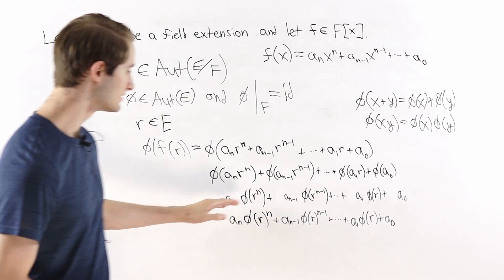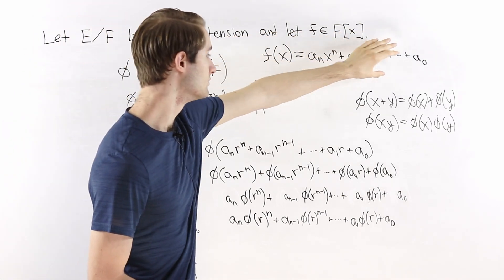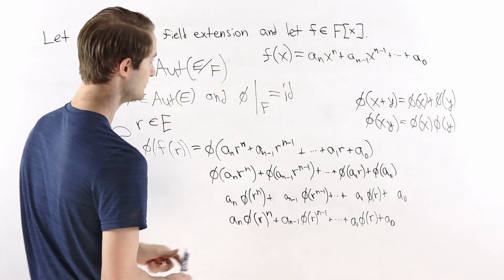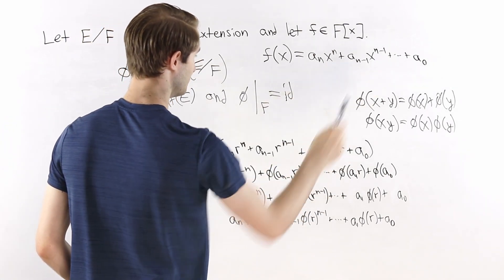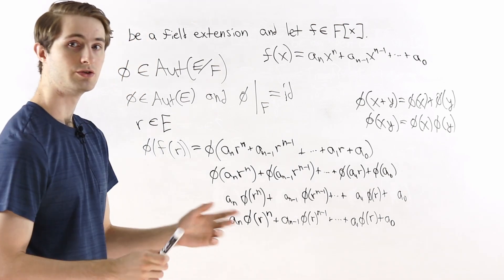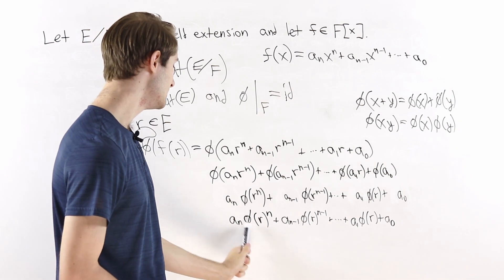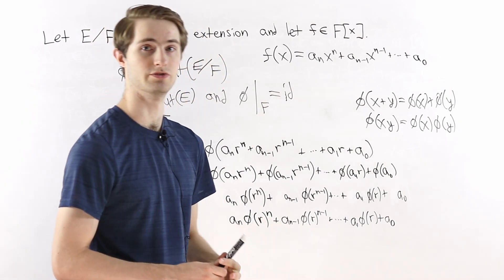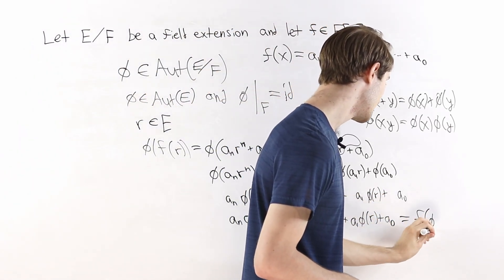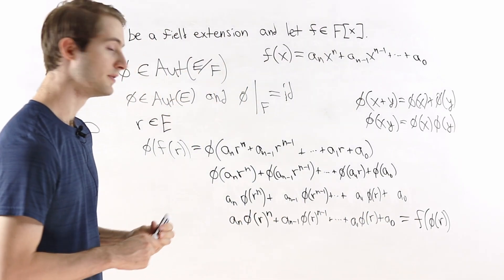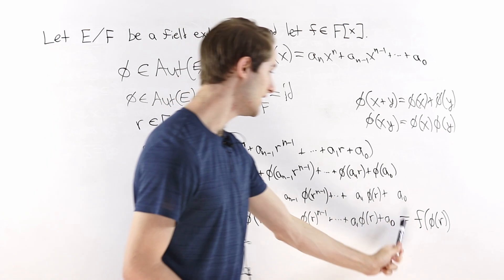Looking at this last line and comparing it to the definition of f of x written out as powers of x, we can see they are actually the same structure. We have a_n times something to the power of n, a_{n-1} times something to the n minus 1, and so on. The only difference is the input: in one case it is x, and here it is phi of r. So this is actually the polynomial f applied to the input phi of r — and we have found that phi of f of r equals f of phi of r.